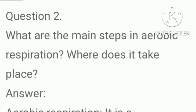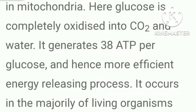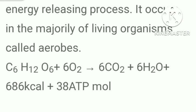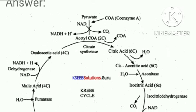What are the main steps in aerobic respiration and where does it take place? Aerobic respiration is a completely oxygen-dependent process occurring in the presence of molecular oxygen. It is centered in mitochondria. Here glucose is completely oxidized into carbon dioxide and water, generating 38 ATP per glucose, making it a highly efficient energy-releasing process. It occurs in the majority of living organisms called aerobes. Give the schematic representation of an overall view of the Krebs cycle.